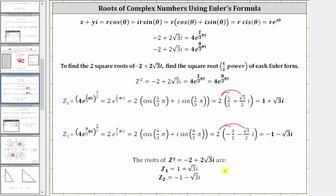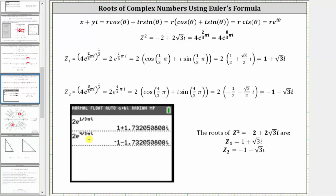On this example, if we try this on the calculator, we need to make sure it is in complex mode and radian mode. Notice that when entering the two roots in exponential form, we only get a decimal approximation for the square root of three. So unless we have a computer algebra system on our calculator, it is important to find the exact trig function values, as we did.